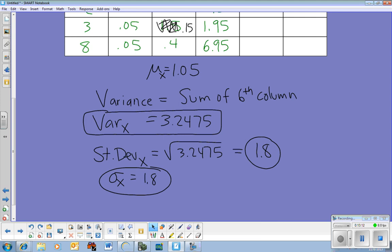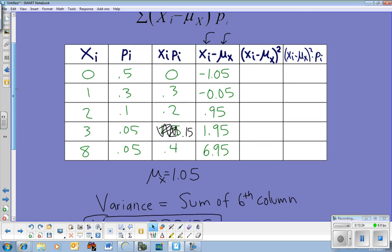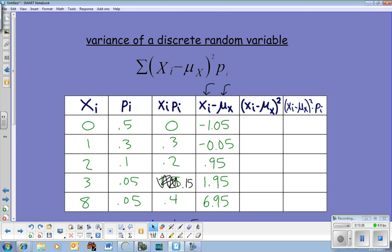Alright, so that's it. That's our goal of the day, to be able to find the mean and the standard deviation of a discrete random variable. Alright? So, that is it. I'm going to go home and feed my cat and go for a run. I'm out.